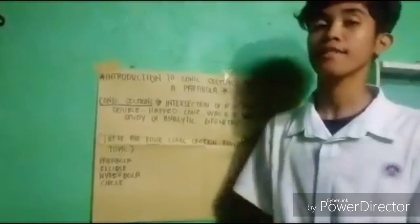There are four conic sections focusing on this topic. First is parabola, second ellipse, third hyperbola, and the last is circle.